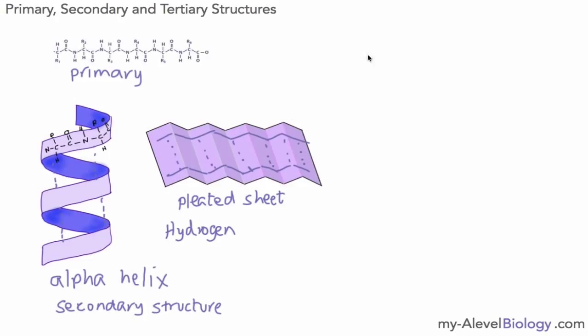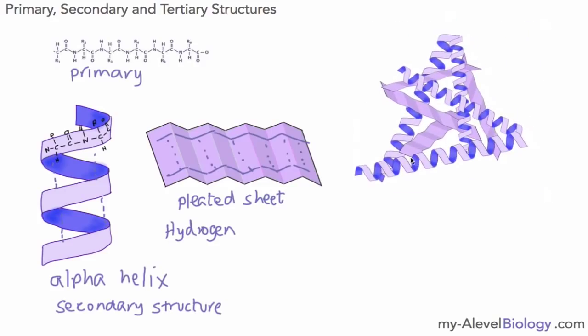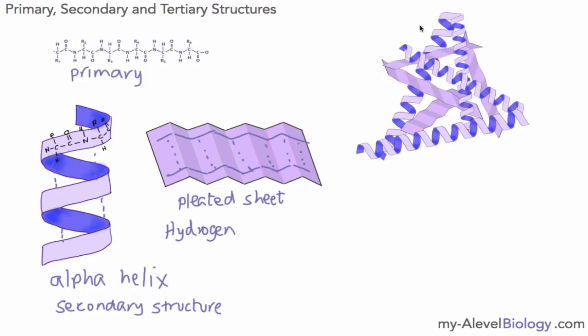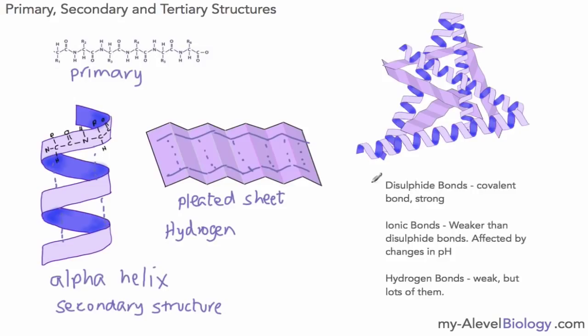So we've got our primary structure here, our secondary structures here, two examples, and the next thing after that is our tertiary structure. And the tertiary structure is the way in which these alpha helices and the beta pleated sheets are folded once more. So there's another level of folding here and you can see that it's made this particular shape. Now in order to make this particular shape and fold the protein in the right way, we have to have a certain number of chemical bonds, and those are these bonds here.